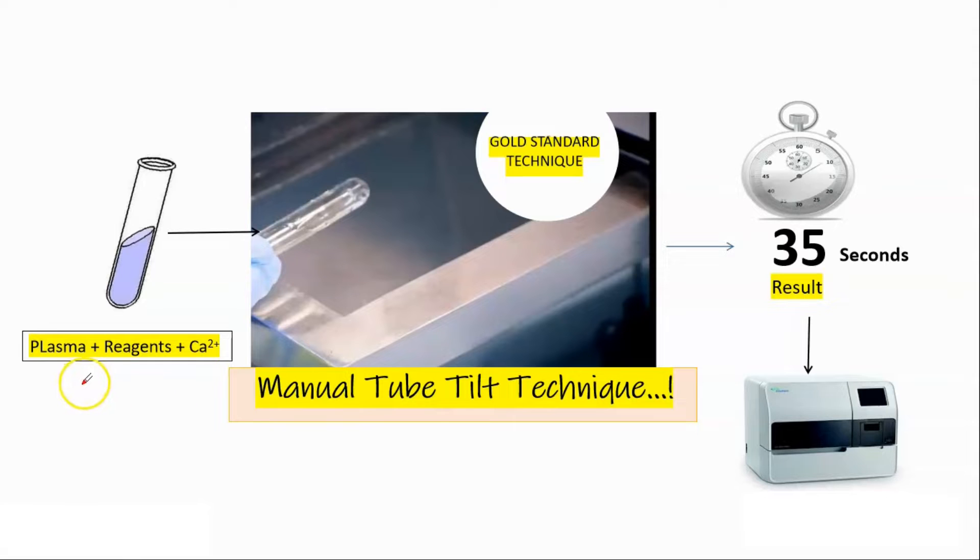So what we do in this technique is put plasma, reagents, and calcium chloride in a test tube and incubate it at optimum temperature for ongoing reaction. Then we basically look for a visible clot by tilting the tube at few intervals of time like few seconds.